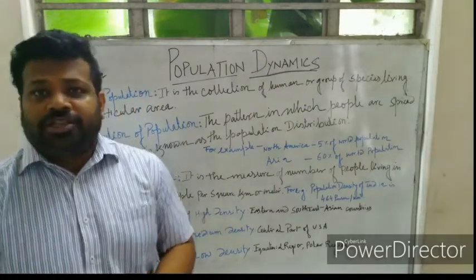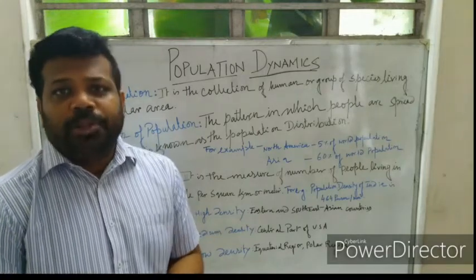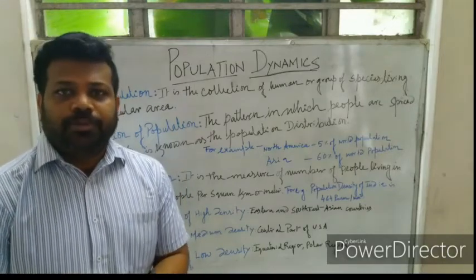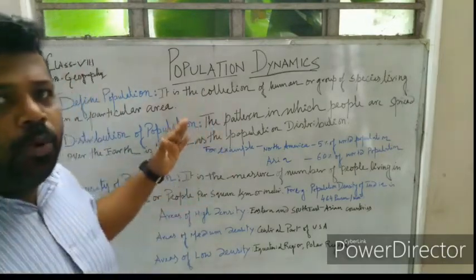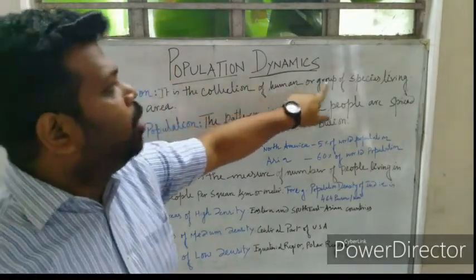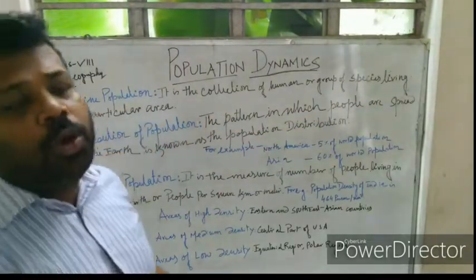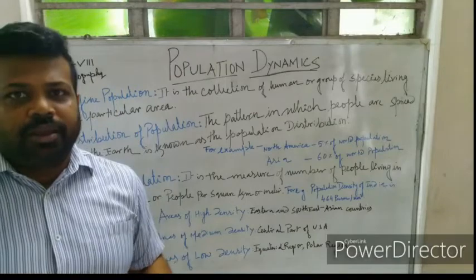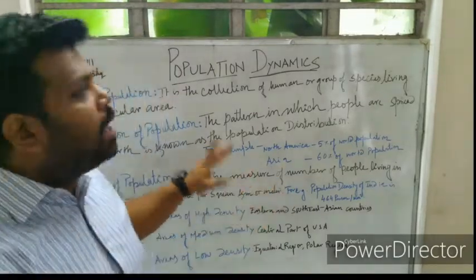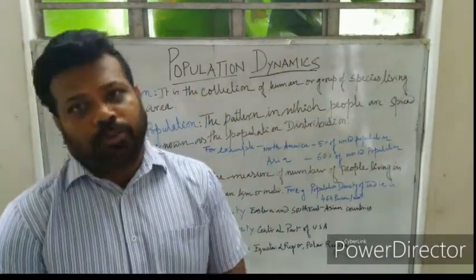Now, what is Population? Population means the number of people, or the number of any species living in or referred to a region. A defined population is a collection of humans or a group of species living in a particular area. When we are talking about population dynamics, we are talking about the human population.